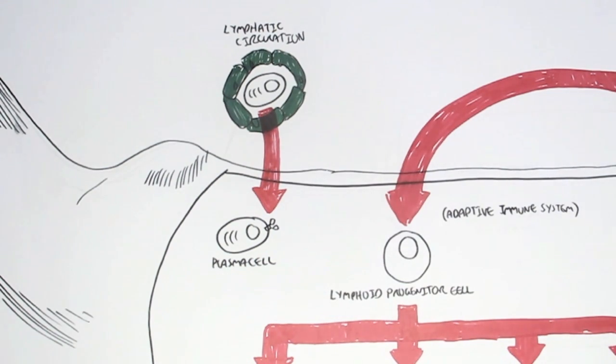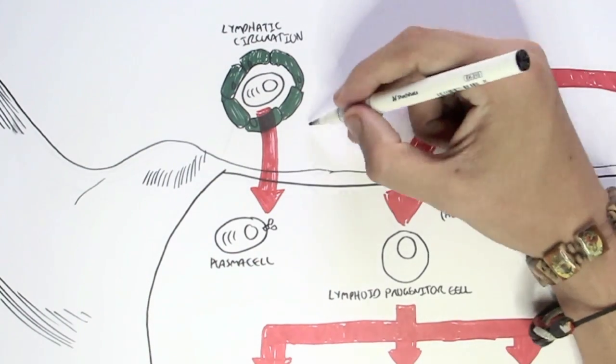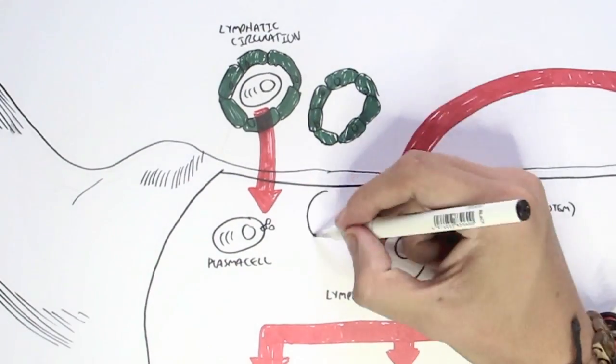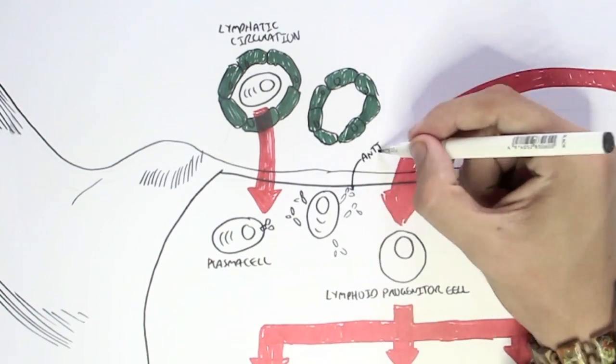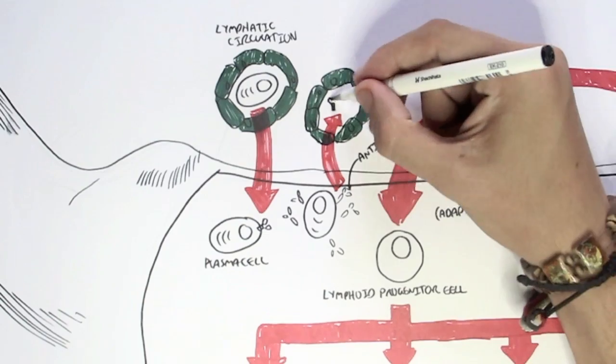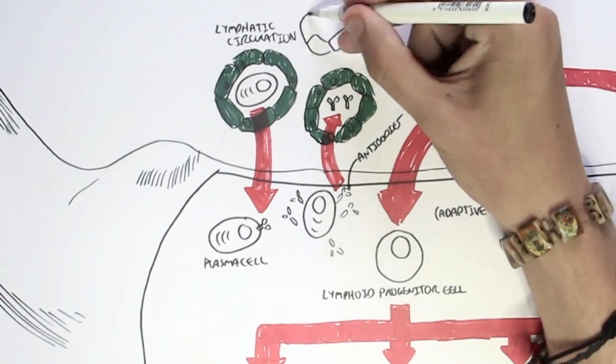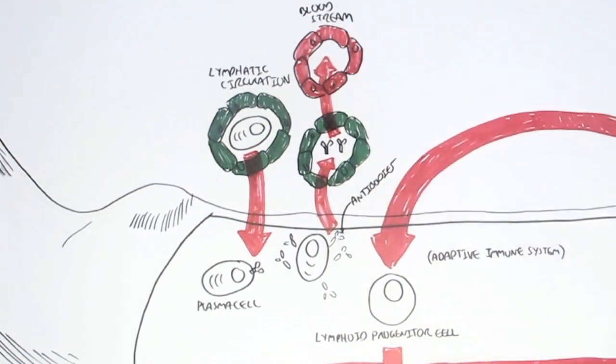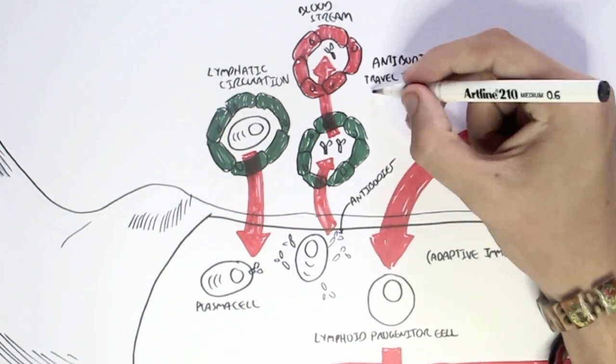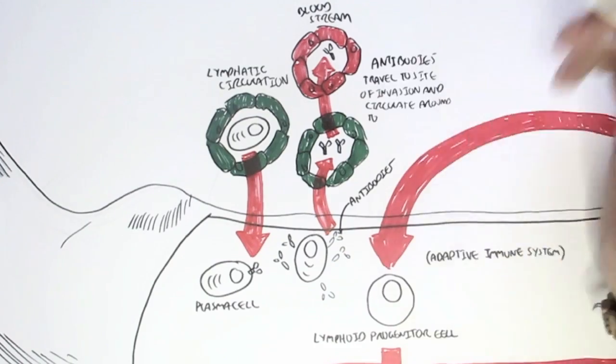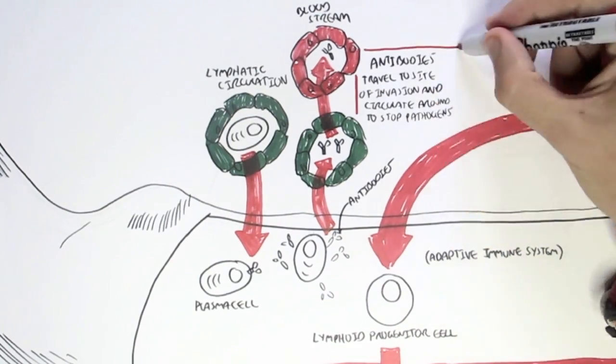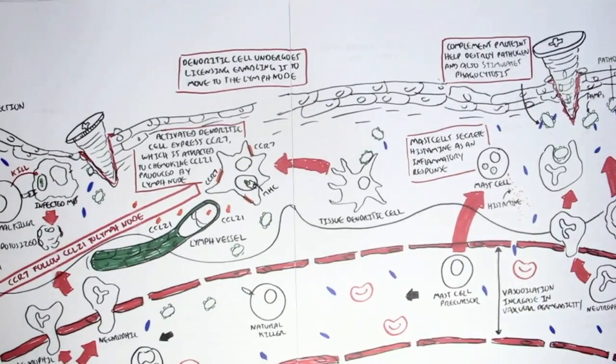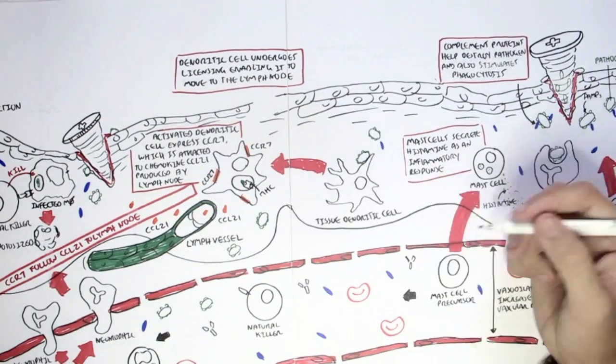And so this plasma cell will secrete antibodies. The antibodies will travel via the lymphatic circulation and/or the blood circulation. These antibodies can also encounter pathogens along the way and help destroy them. These antibodies will travel to the site of invasion, usually, and circulate around to stop the pathogens from traveling to other destinations. So here we have the antibodies, and the antibodies will bind onto the pathogens, and they will promote phagocytosis as well as many other things.